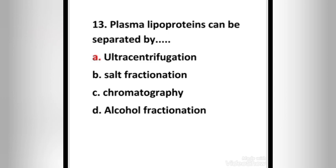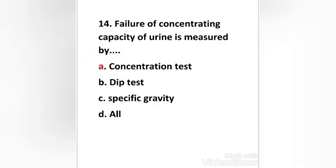Right answer is option A: ultracentrifugation. Plasma proteins can be separated by ultracentrifugation. Ultracentrifugation is a method most often employed for separation and quantitation of lipoproteins. Next question: Failure of concentrating capacity of urine is measured by concentration test, dip test, specific gravity. Right answer is option A: concentration test.